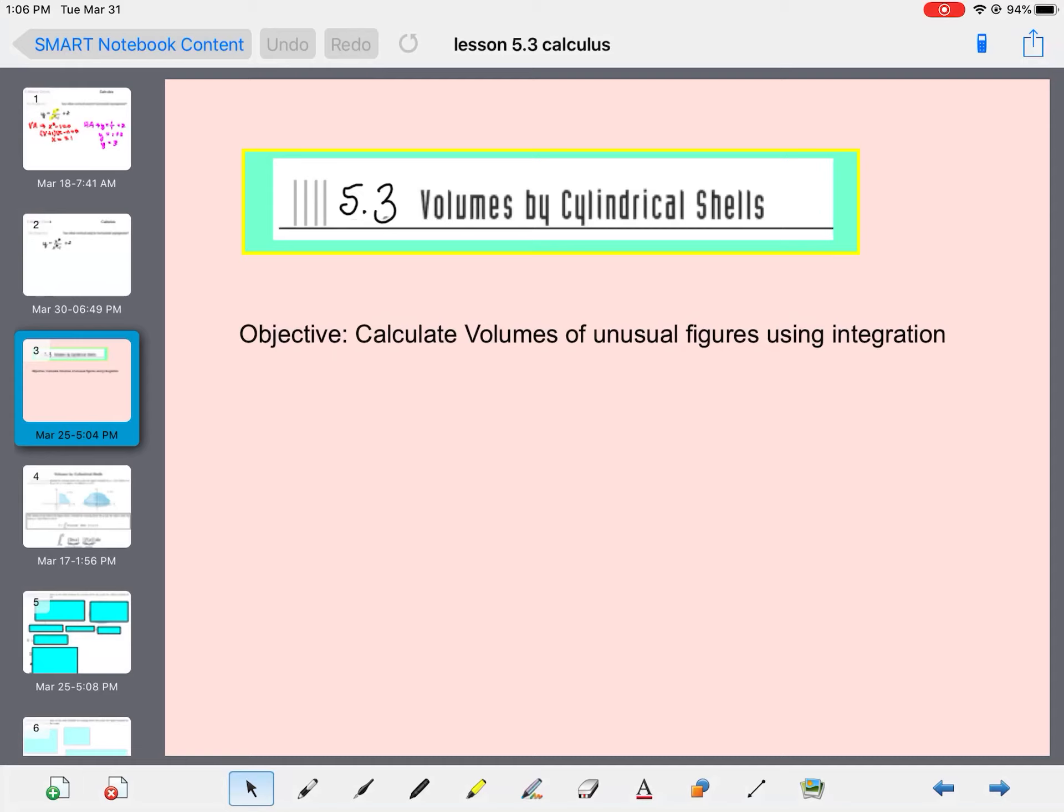When you do disks and washers, it works pretty well for many, many equations. The trouble with that is not every equation can be rewritten in the correct form. Remember, if you rotate it around the x-axis, you want a function of x. If you rotate it about the y-axis, you want a function of y. Not all functions will allow you to do that. And so, what the shell method allows us to do is to calculate volumes of things where we can't necessarily rearrange it the way we want to. And, you know, if the other method works, you can still use that other method. But this just helps us for times when you get kind of stuck in the other method.